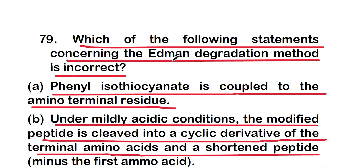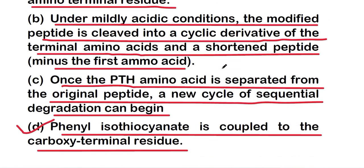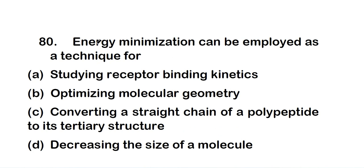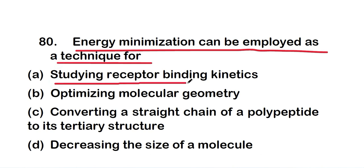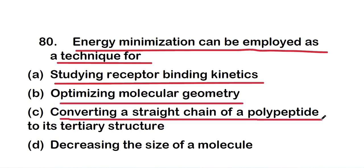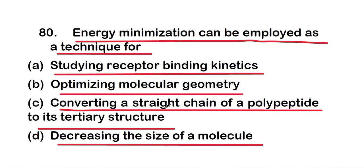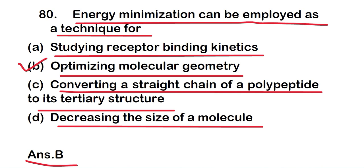The last question: energy minimization can be employed as a technique for — option A, studying receptor binding kinetics; option B, optimizing molecular geometry; option C, converting a straight chain of a polypeptide to its tertiary structure; or option D, decreasing the size of a molecule. The right answer is option B — energy minimization is a technique for optimizing molecular geometry. Those are all 20 questions on biochemistry for Part 4. Thank you for watching.